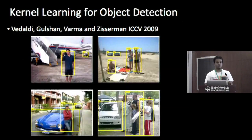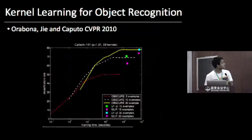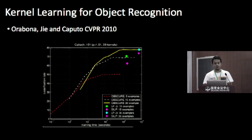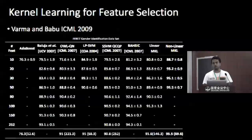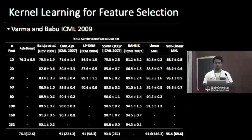Some motivation behind kernel learning: recent studies show it is good for object detection, and kernel learning has given state-of-the-art results on Caltech 101, an object recognition dataset. Kernel learning has also been used for feature selection — in a paper by Verma and Babu at ICML 2009, a nonlinear combination of kernels for feature selection obtained better results than other techniques.